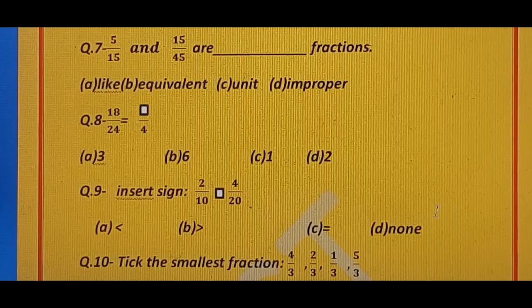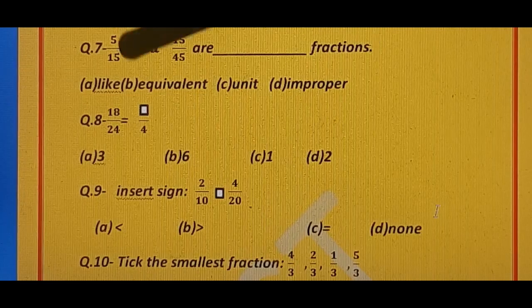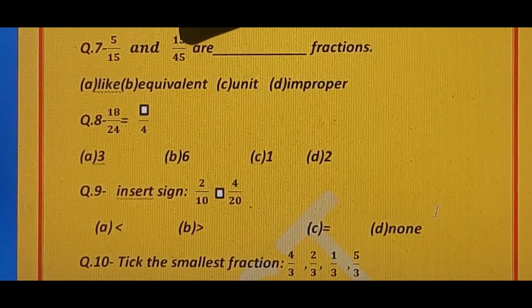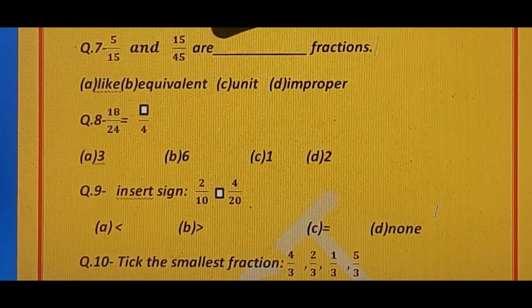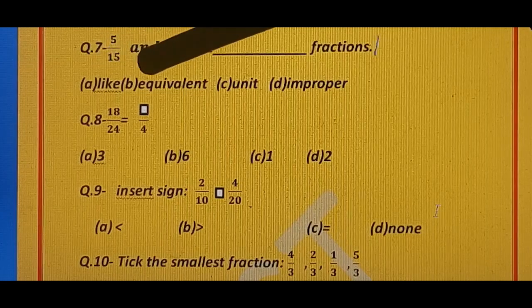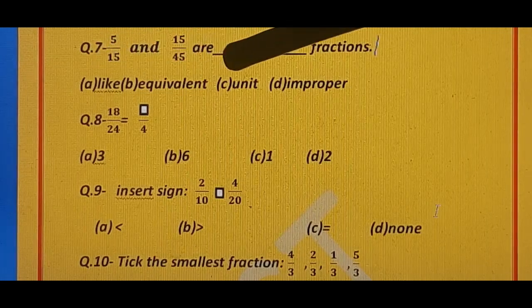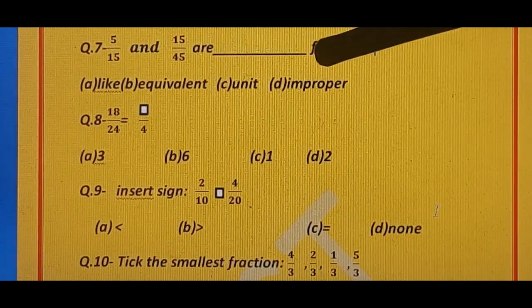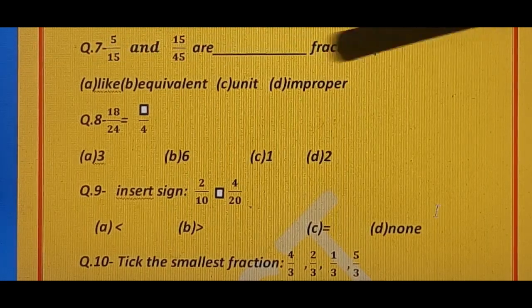Question number 7. 5 upon 15, 15 upon 15, and 15 upon 45 are dash fractions. Options are: A) like, B) equivalent, C) unit, and D) improper.